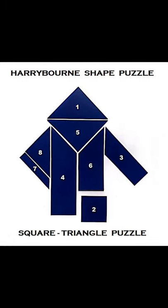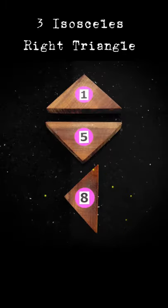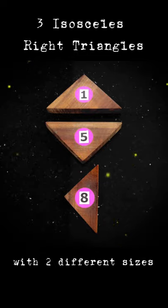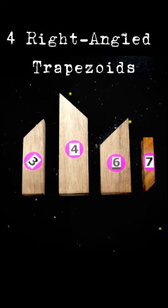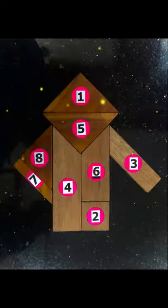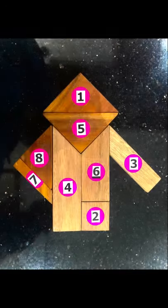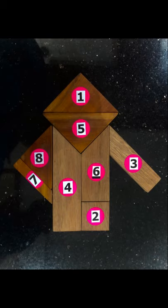Harrybourne shape puzzle: a shape puzzle composed of eight puzzle pieces that can be arranged to make squares and triangles using any number of puzzle pieces without overlap. This is made up of three isosceles right triangles with two different sizes, a square, and four right angle trapezoids with four different sizes. Now let's try to solve the puzzle.